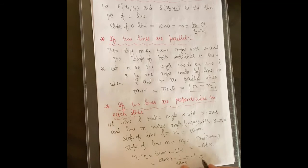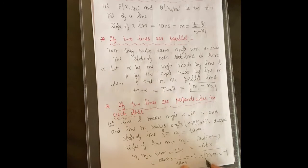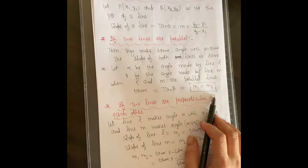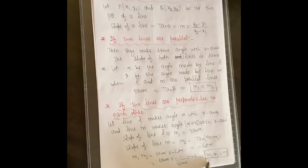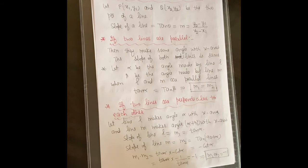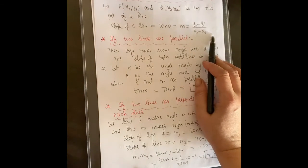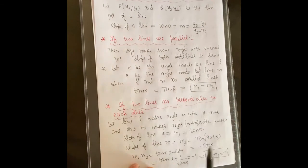This is a very important result: M1 × M2 = −1. That means if two lines are perpendicular, then the product of their slopes is −1. To summarize: if two lines are parallel, their slopes are equal; if two lines are perpendicular, the product of their slopes is always equal to −1. These results are very important from the examination point of view.